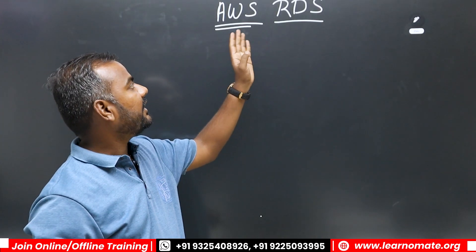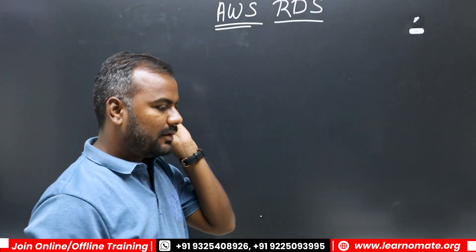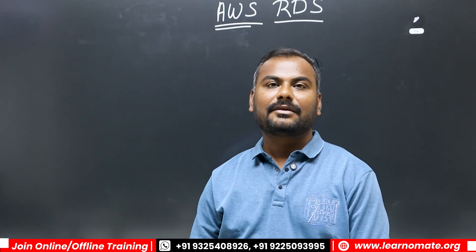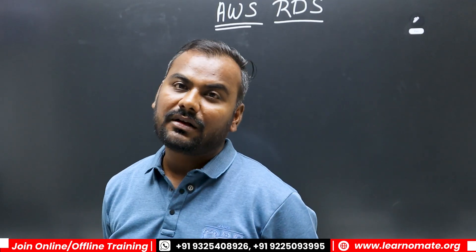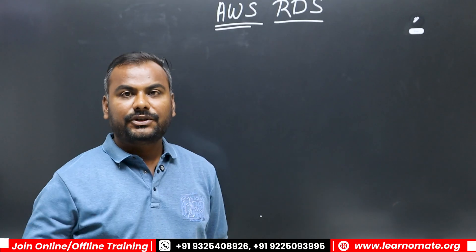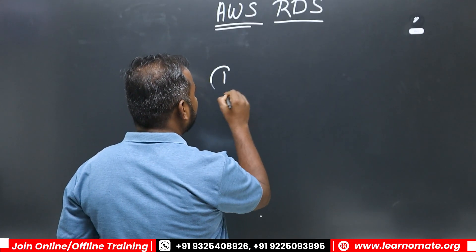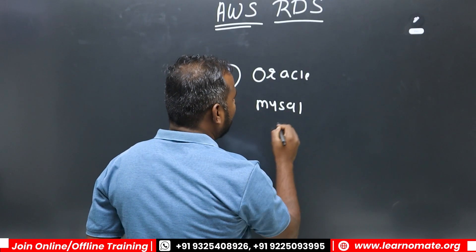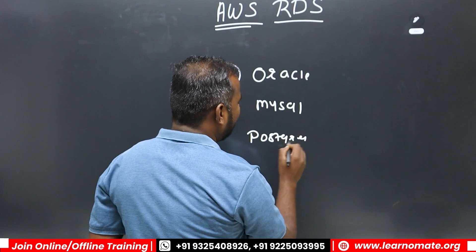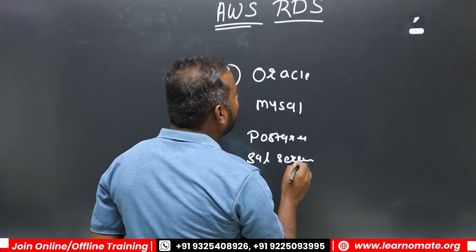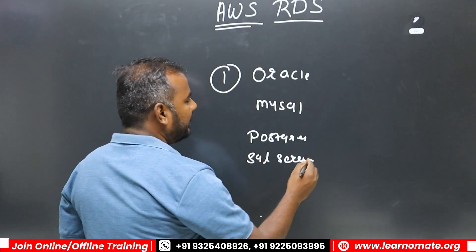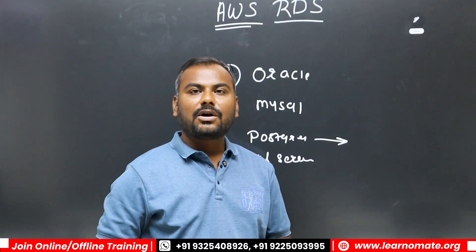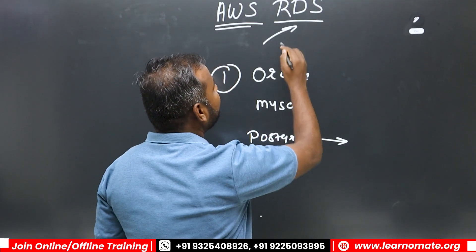Some clients are asking whether they can have databases hosted on a cloud platform. For example, Oracle database, MySQL database, PostgreSQL database, or SQL Server. Apart from these, enterprise versions are also available like AWS Aurora. All these databases can be managed under this service, which we call RDS.